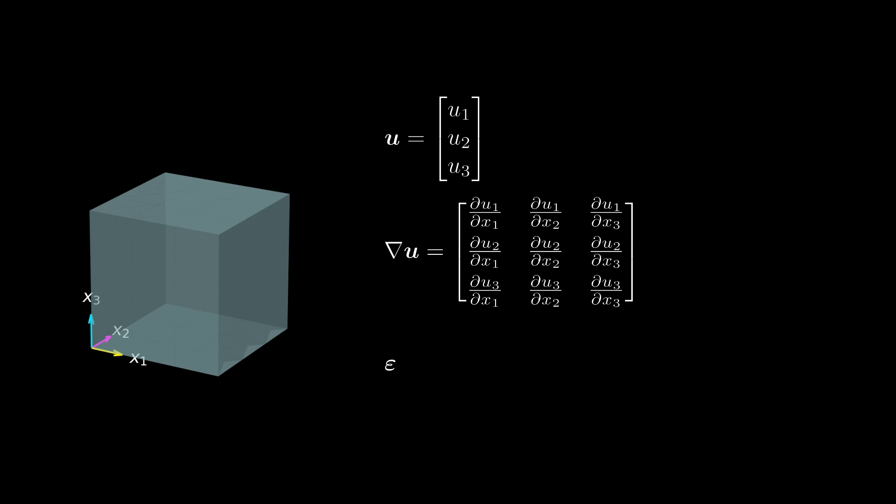Recognizing that the strain in one dimension is the derivative of the displacement field, a seemingly natural choice for defining the strain tensor in three dimensions would be that the strain tensor is the gradient of the displacement field. Spoiler, we shouldn't do that. But let's anyways think this idea through.